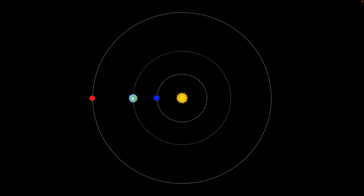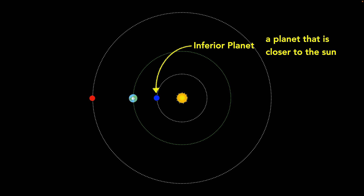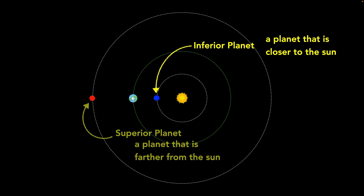For that blue planet closer to the sun, we call that an inferior planet. That has nothing to do with the status or quality of that planet — inferior just means its distance to the sun is less than Earth's. Similarly, the planet farther from the sun we call a superior planet. It's not necessarily better than Earth; superior just means farther away from the sun than we are.